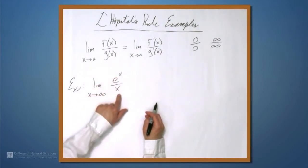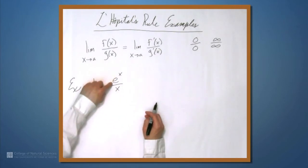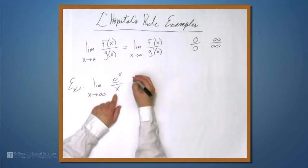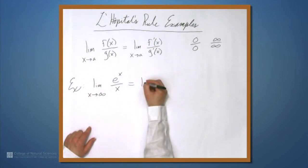So the limit as x approaches infinity of e to the x over x. Now we may already have an intuitive idea of what happens here, because e to the x is exponential. This grows very quickly, goes to infinity, as does x, but x goes a lot slower than e to the x.